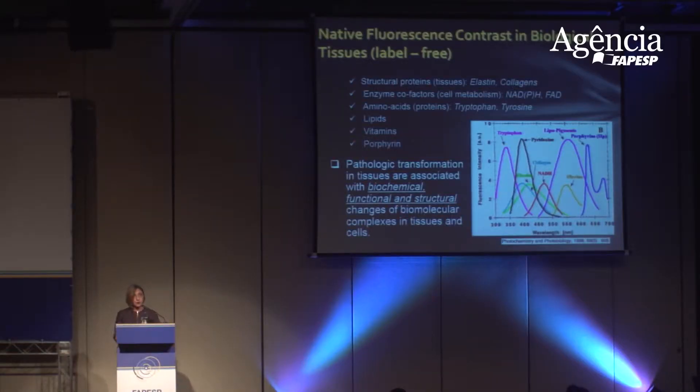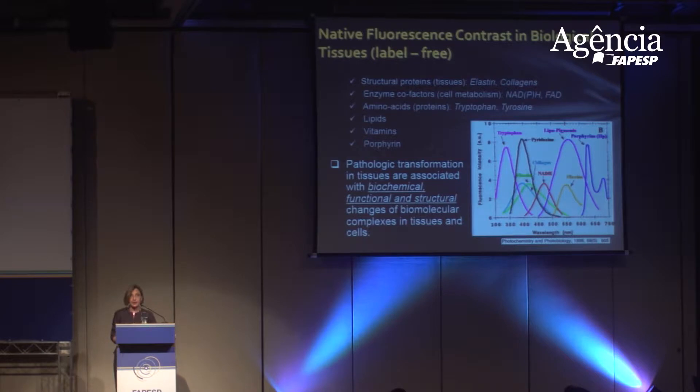There are a broad range of molecules which are naturally present in tissue that have this fluorescence property. Pathological transformations will be associated with biochemical, functional, and structural changes. You can have structural proteins like elastin, collagen, collagen cross-links. Also enzyme cofactors involving cellular metabolism such as NADH or FAD that have again the property of absorbing and re-emitting light. Also porphyrins, vitamins. So pathological transformations will be associated with biochemical, functional, and structural changes of these biomolecular complexes in tissues and cells, and therefore they can be monitored based on fluorescent measurements.